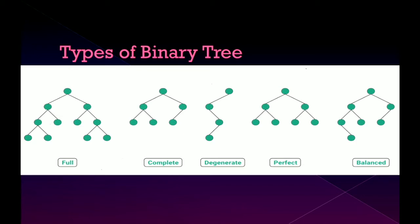Degenerate binary tree is a binary tree in which every parent node has only one child node. Perfect binary tree is a binary tree in which all internal nodes have two children and all leaf nodes are at same depth or same level.